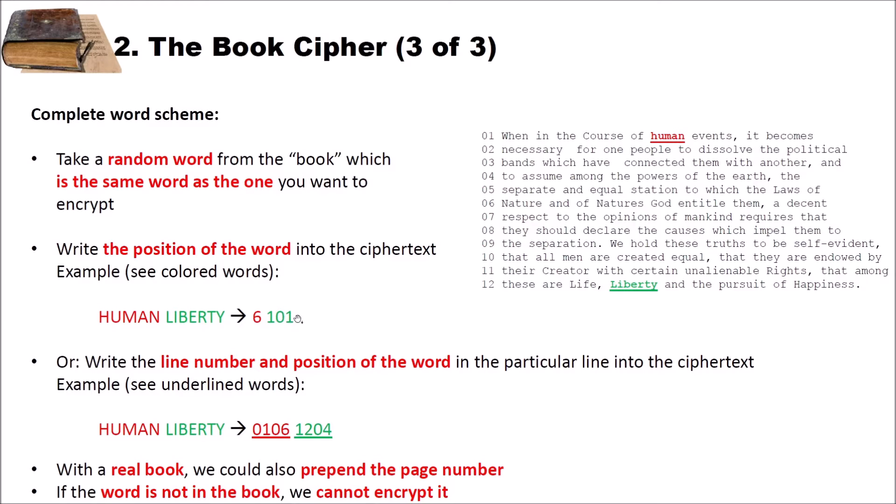Clearly, someone who wants to decrypt this searches for these words in these positions. Like six, we search for the sixth word and write human. And for the 101st word and write liberty. Of course, we can also encode the line number and position of the word as we did before with single letters. In this case, we have again human liberty. But here we write 0106. That means first line, sixth word. And for liberty, we write 12 and four because twelfth line and fourth word. Clearly, with a real book, we could also again prepend the page numbers. And as I already said, if the word is not in the book, we cannot encrypt it.